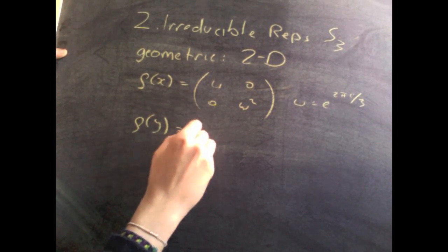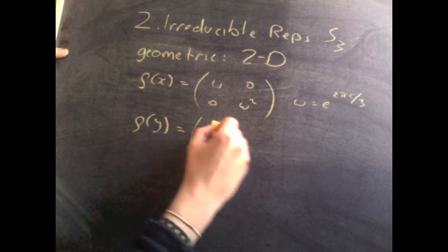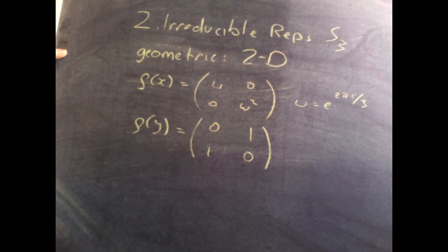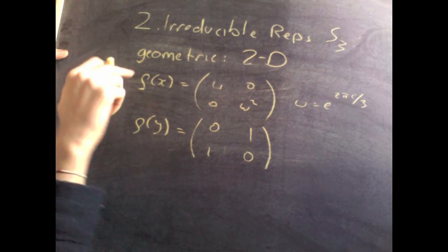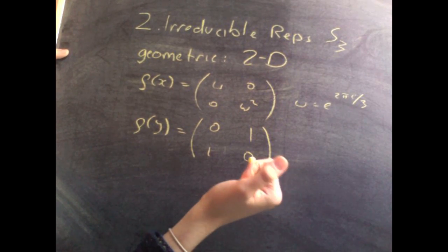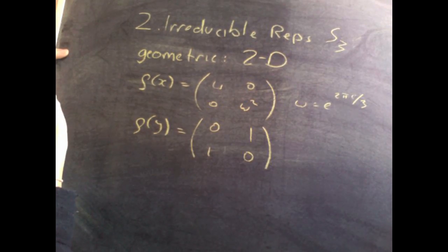And on the reflection, we just get 0, 1, 1, 0. Again, you'll notice that these representations satisfy the relations given in the presentation of D6.